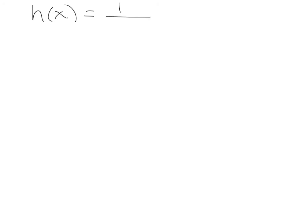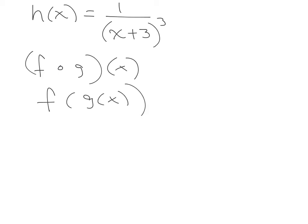Let's look at another one. Let's say we have h of x equals 1 over (x plus 3) cubed. If I look at this function, I've got 1 over something that is cubed. The directions will tell you which function goes inside, so let's say they write it as f of g of x. The g is the inner function — the thing that something is happening to — and that something is x plus 3, so x plus 3 is my inner function.